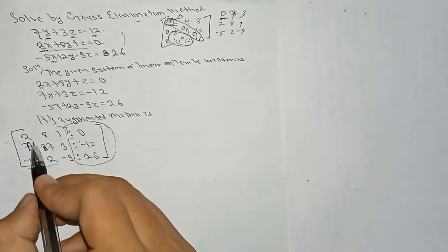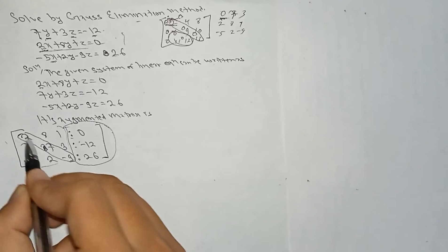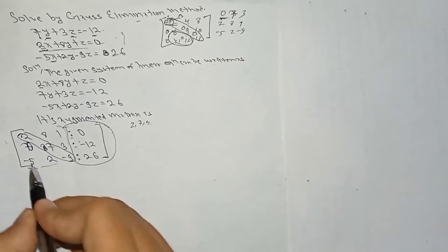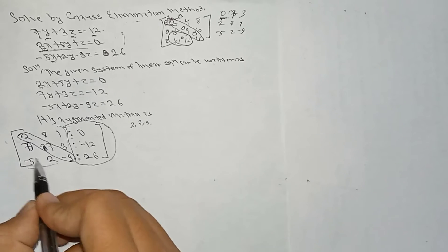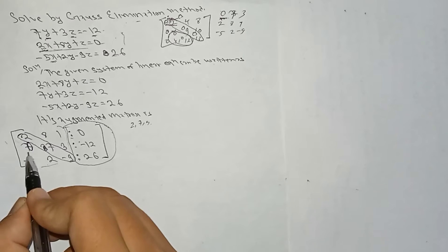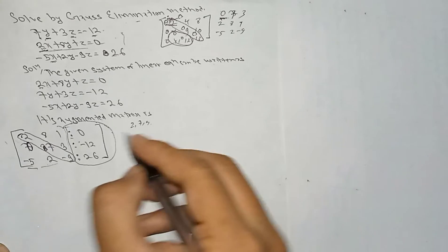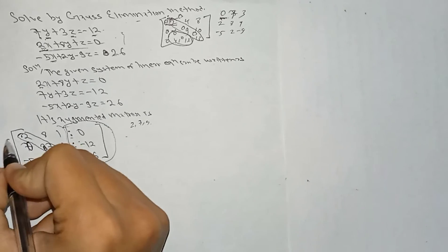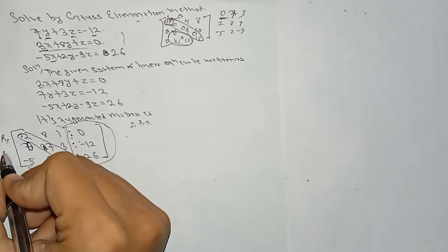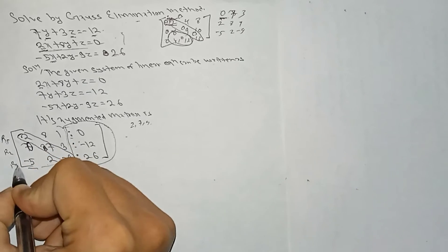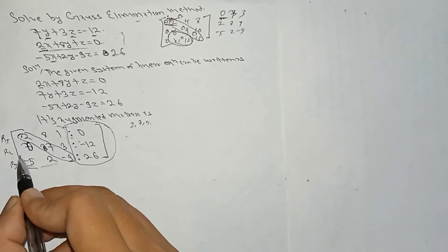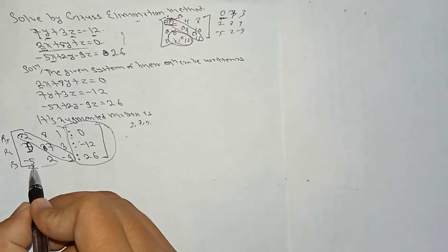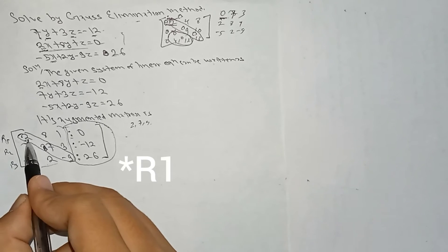The leading diagonal of this matrix is 2, 7, 9. We have to make the lower part zero. Here, one position is already 0. We have to make minus 5 and 2 into 0. This is row 1, row 2, and row 3. Row 2 is already 0, so we need to make row 3 into 0 with the help of row 1.